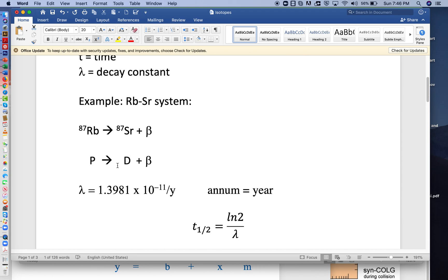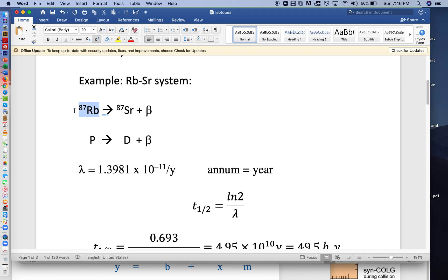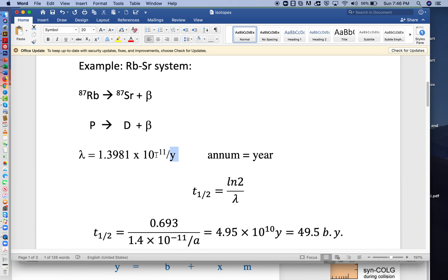Let's take an example from the rubidium-strontium system. The parent atom is rubidium-87; it decays into strontium-87 and ejects a beta particle. Parent goes to daughter plus beta. Lambda for this is about 1.4 times 10 to the minus 11. Sometimes you'll see this as per 'a' instead of per 'y'—that's using 'a' for annum, the Latin for year.